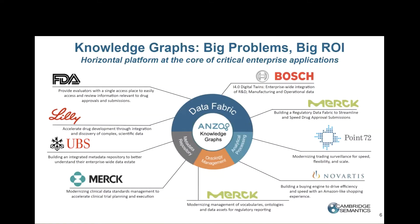When we talk about a knowledge graph, I like to think about it as a kernel to really several different use cases being deployed at scale. Traditionally, some of Anzo's biggest customers were in pharmaceuticals, but we've been expanding rapidly into other verticals such as government, healthcare, manufacturing, and financial services.